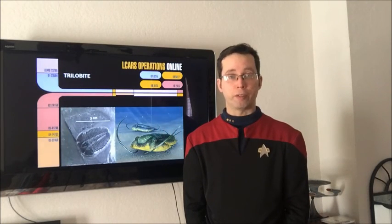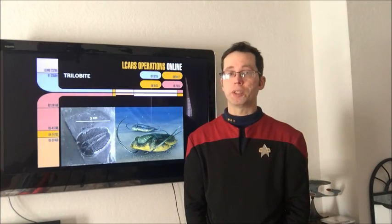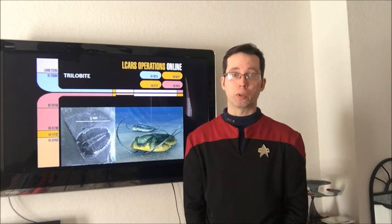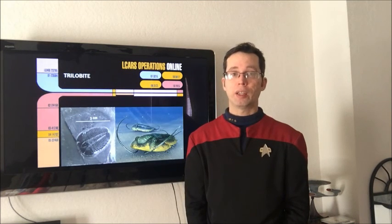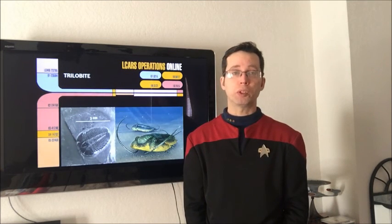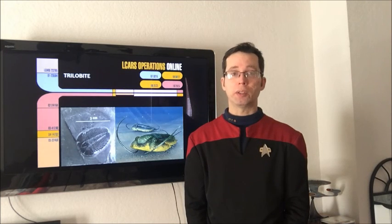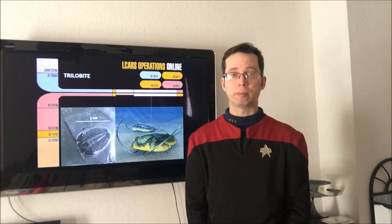This is a trilobite fossil that also formed in a shale deposit approximately 220 million years ago. Trilobites also come in a variety of shapes and sizes. This is an example of one of its more simpler forms at approximately 3 centimeters in length. Trilobites and ammonites cohabitated Earth's primordial oceans at approximately the same time period.